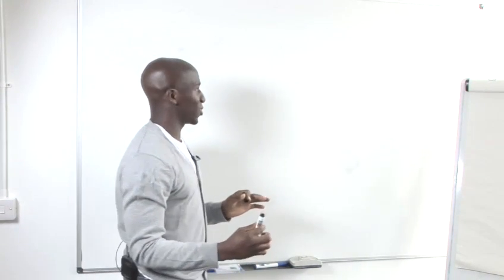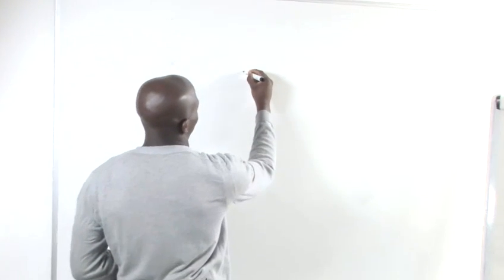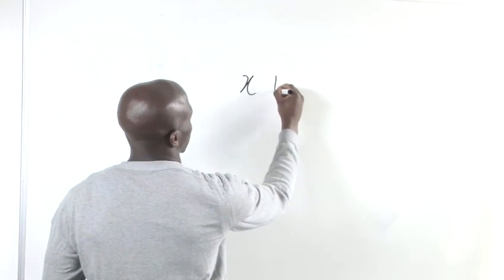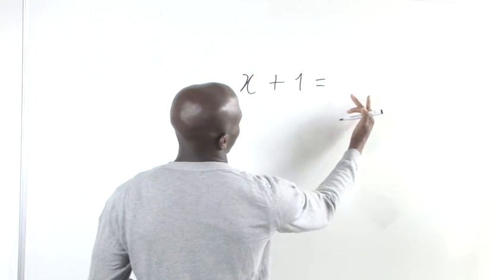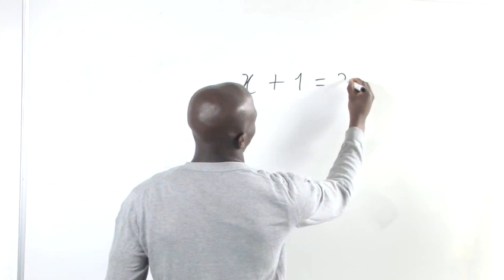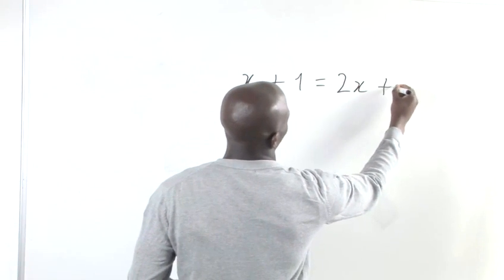The first thing we want to do is set up our basic equation. Now we've got x plus 1, and then equals, and then on our right hand side we've got 2x plus 4.